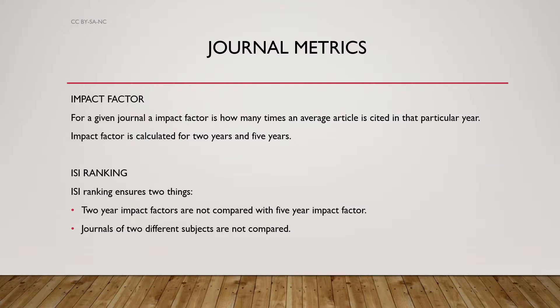ISI Ranking ensures two things: a two-year impact factor should not be compared with a five-year impact factor, because generally the two-year impact factor is smaller than the five-year impact factor. So if we are comparing two journals, we should compare either both two-year or both five-year impact factors. Additionally, journals of two different subjects should not be compared on the basis of citations, as that would also lead to a faulty comparison.